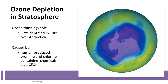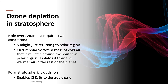The ozone depletion is typically caused by human-produced bromine and chlorine-containing chemicals, primarily CFCs (chlorofluorocarbons) which were used as refrigerants. Ozone depletion in the stratosphere requires two conditions: sunlight returning to the polar region, and the circumpolar vortex — a mass of cold air circulating around the southern polar region. The isolation of this vortex from warmer air creates the conditions for ozone destruction.